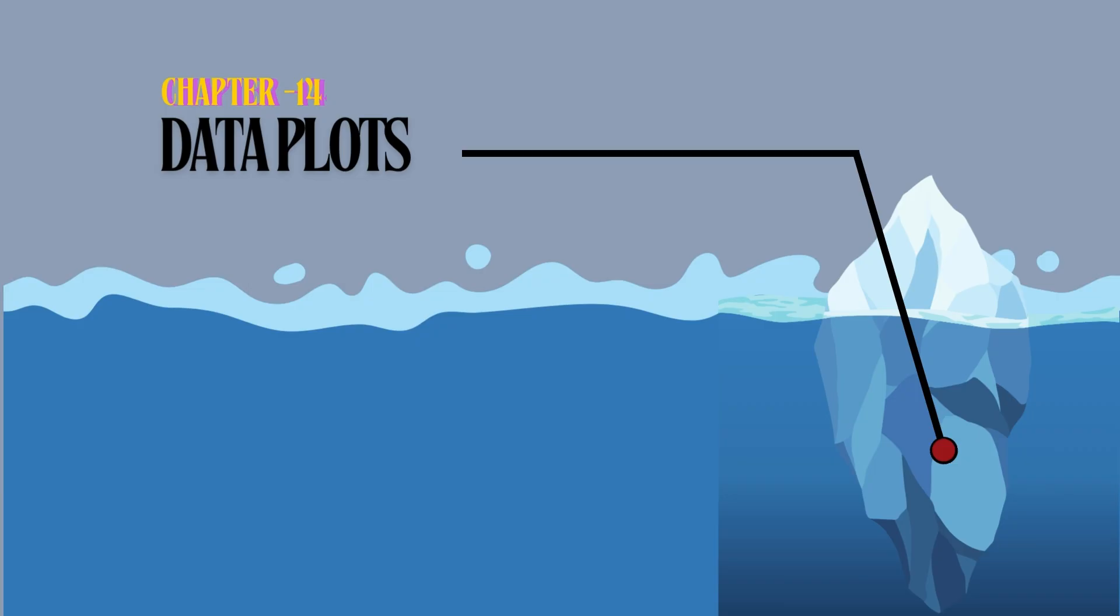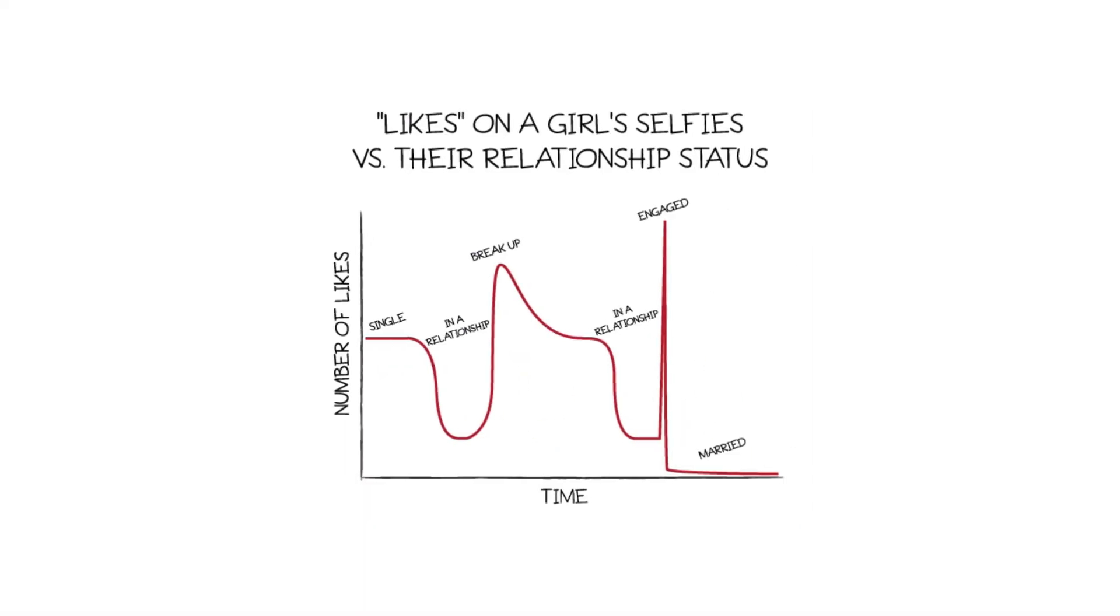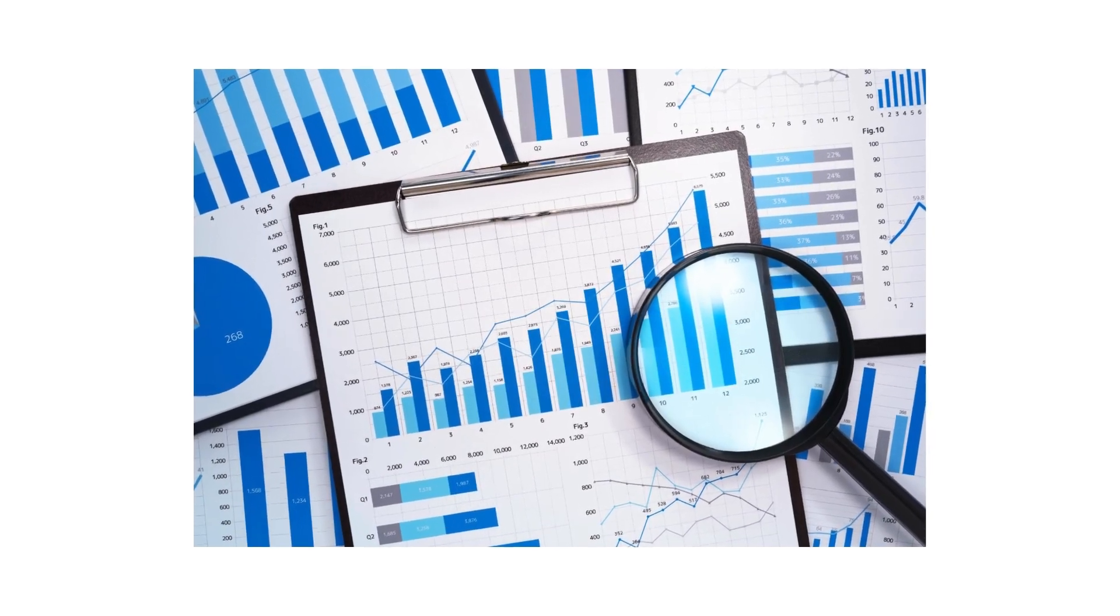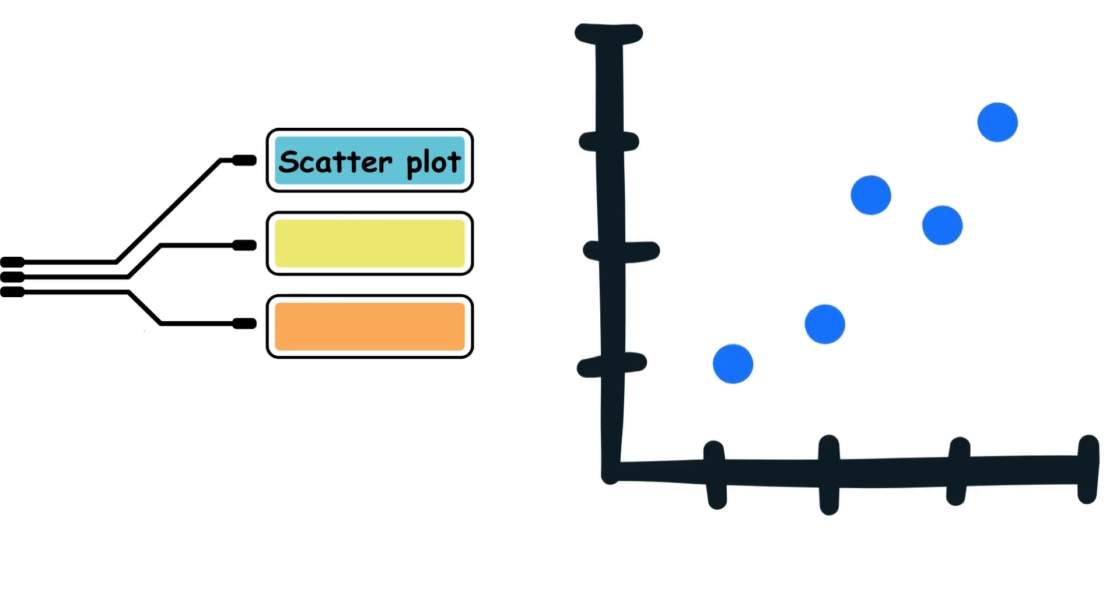Data plots. Data is a collection of facts and statistics. This can be visually represented using a plot. Some types of plots include: 1, scatter plot. A two-axis plot where each axis is associated with a variable. Pieces of data are represented as points on the plot.